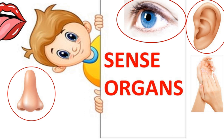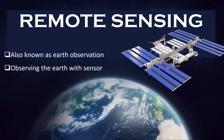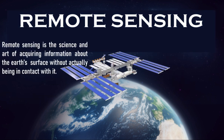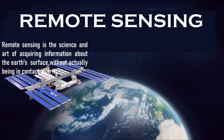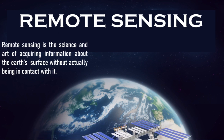The other two organs — the tongue and skin — sense by touching objects, so these two cannot be considered remote sensors. In the world of geospatial science, remote sensing, also known as earth observation, means observing the earth with sensors from high above its surface. Nowadays, remote sensing is mainly performed from space using satellites. In simple terms, remote sensing can be defined as the art and science of acquiring information about the earth's surface without actually being in contact with it.